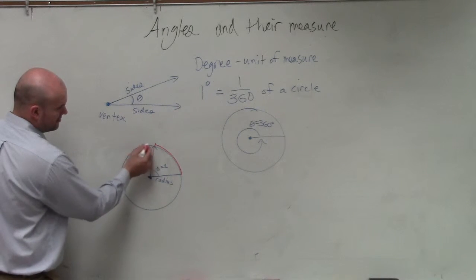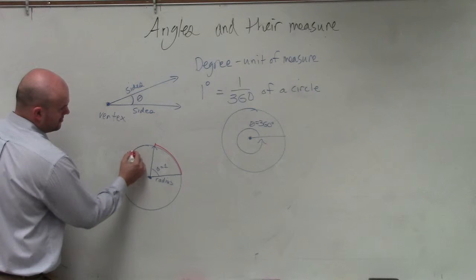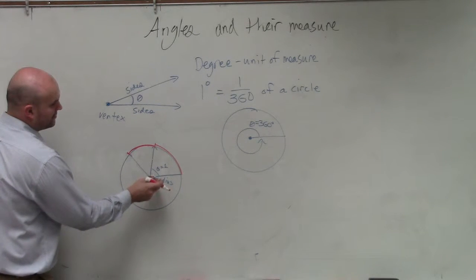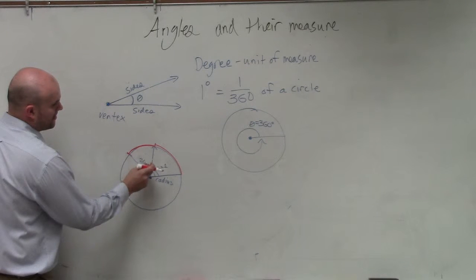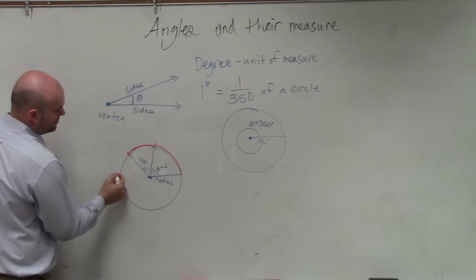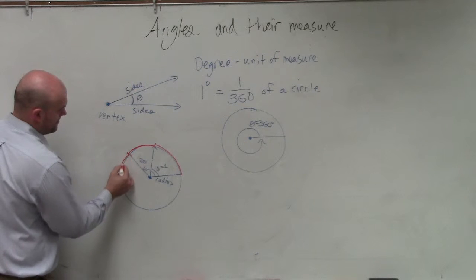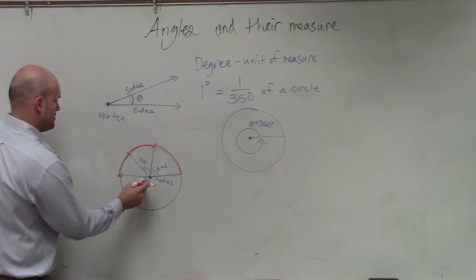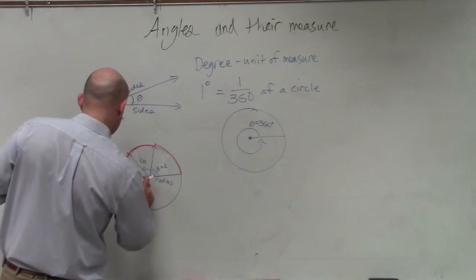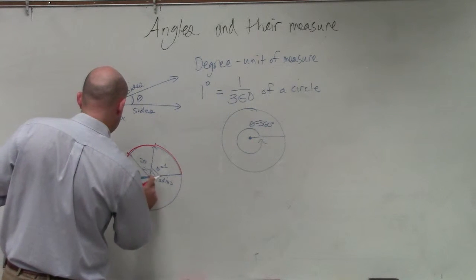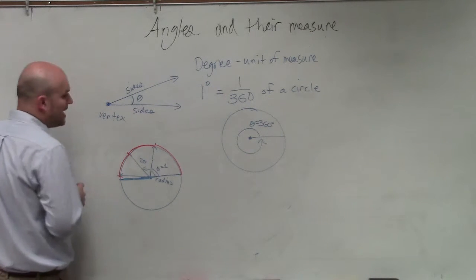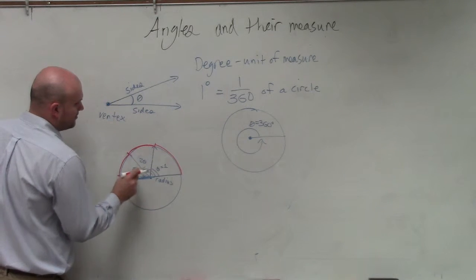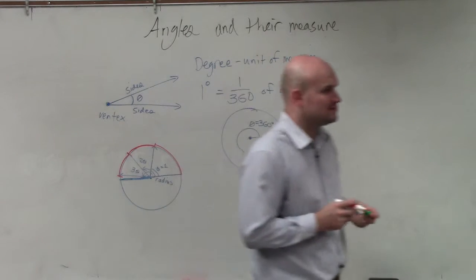You could do two radians — wrap it around here and you'd have two radians — and then three radians. Three radians gets close to going all the way around the circle, but it does not actually go all the way around.